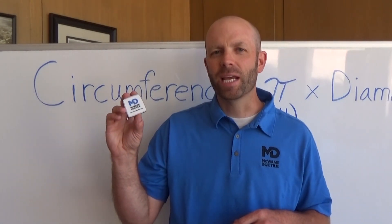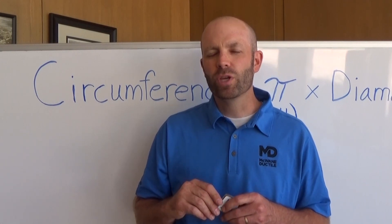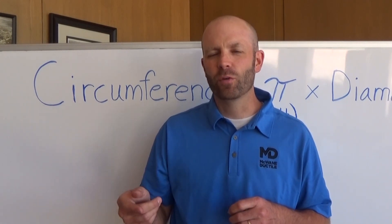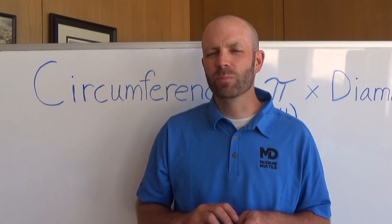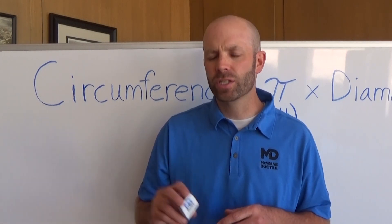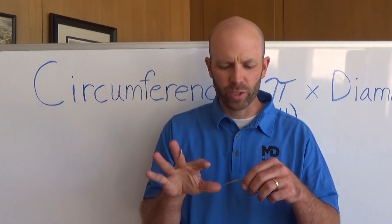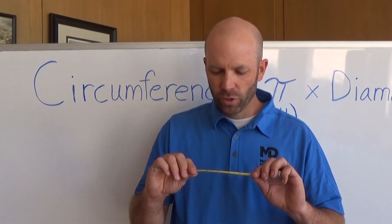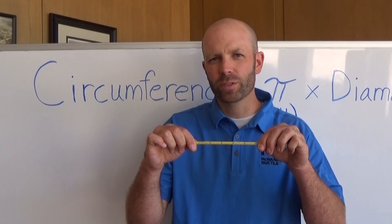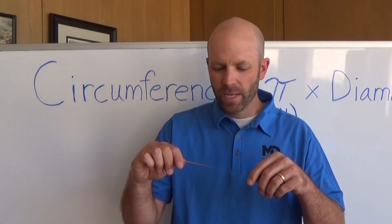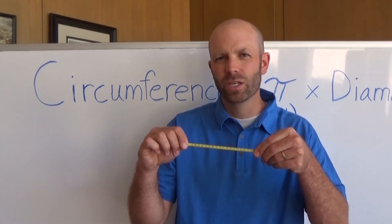This is an OD tape. The OD stands for outside diameter. We use it to measure the average outside diameter of a piece of ductile iron pipe. There are many different kinds, but the most common type in the utility construction industry looks like this. It's a flat piece of metal that's been marked on two sides. One side is marked with regular imperial inches, just like a regular tape measure, and the other side is broken down into segments divided into hundredths of an inch.